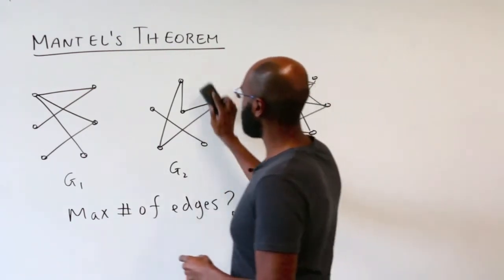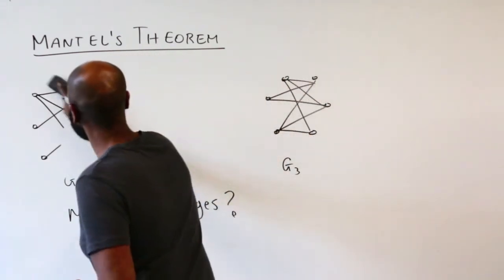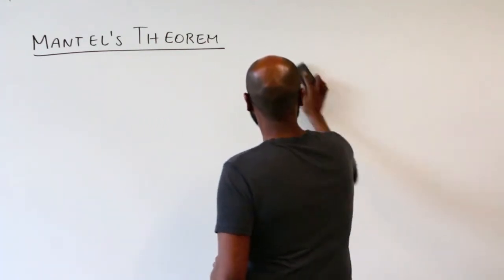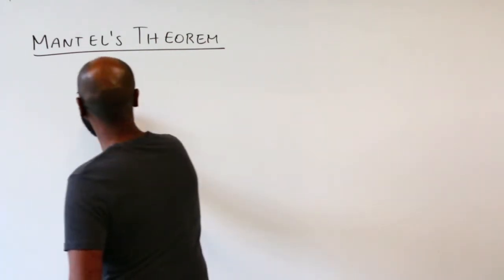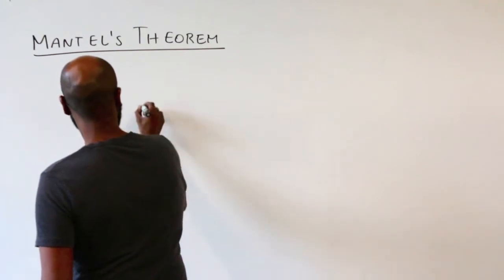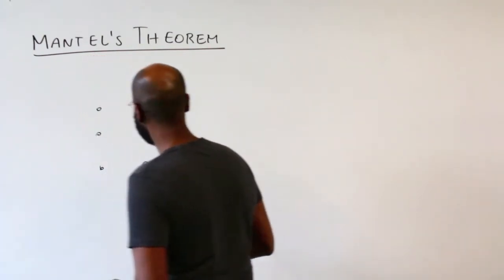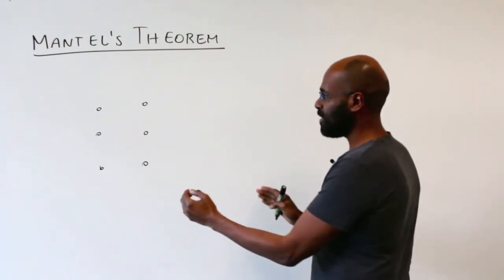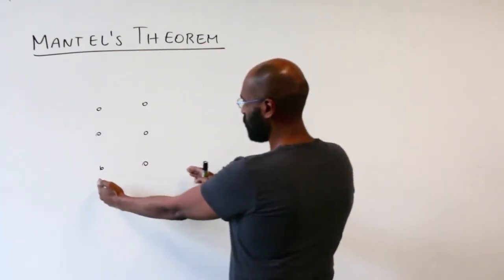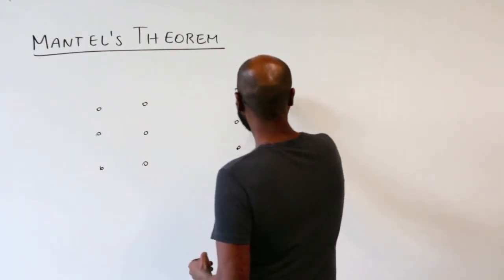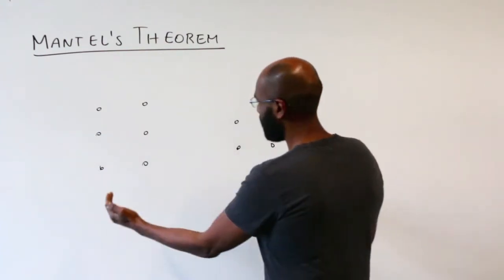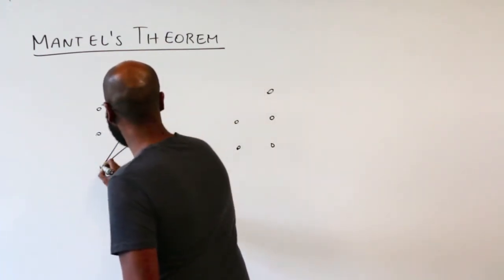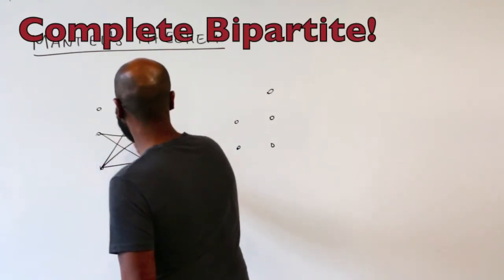Let's investigate the situation by looking at graphs with six vertices first. Say we have a graph of six vertices and it doesn't have a three-cycle in it. Let's see how many edges we can pack in. One thing we could do is make the graph bipartite, meaning that we split the vertices into two sides and have edges going between each side, with every single vertex on one side adjacent to every single vertex on the other.